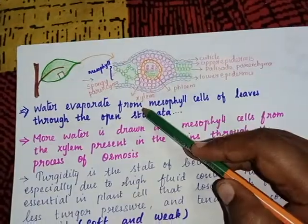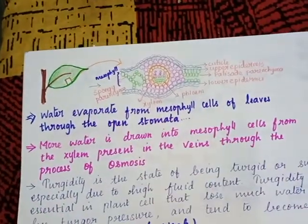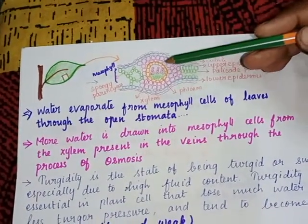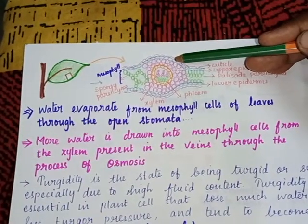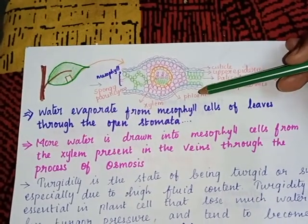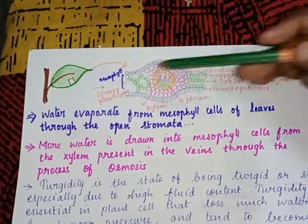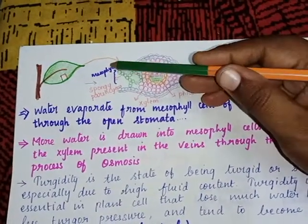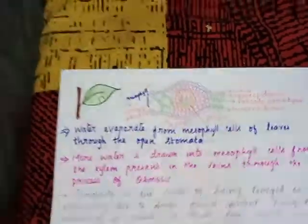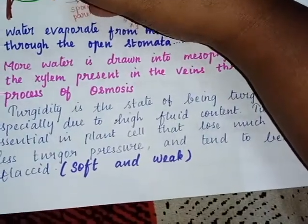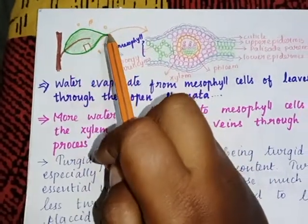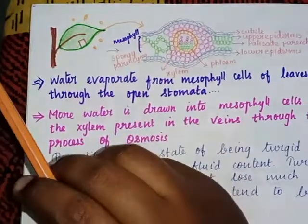Water evaporates from the mesophyll cell. What is meant by mesophyll cell? This is the TS of a leaf — this is the upper epidermis and this is the lower epidermis. The center part is called mesophyll. Water evaporates from mesophyll — mesophyll means middle of the leaf. Meso means middle, phyll means leaf.